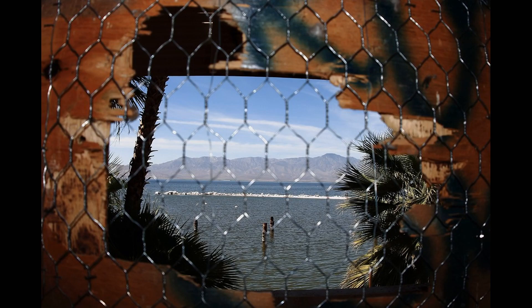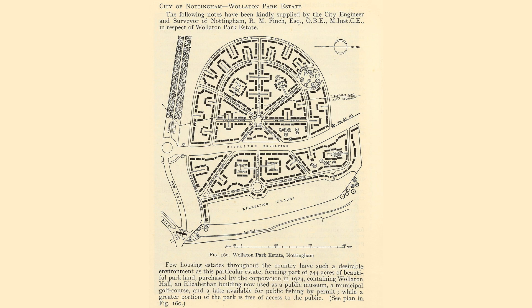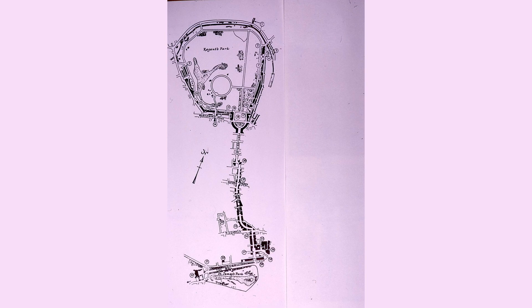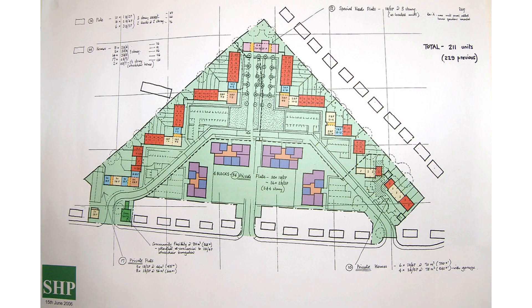While estate planning is important, there are some common mistakes that people make. One of the most common is not having an estate plan at all. Many people assume that estate planning is only for the wealthy, but this is not the case. Another common mistake is not updating your estate plan regularly. Life changes, and your estate plan should reflect those changes. For example, if you get married, divorced, have children, or acquire new assets, you should update your estate plan to reflect these changes.